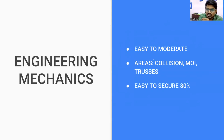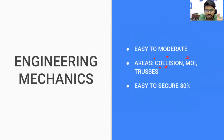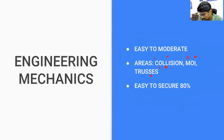Engineering Mechanics had three questions — which is a good number for this subject. One question is from collision, which is a repetitive topic appearing every year. Moment of inertia question is very simple if you know standard formulas for rectangle and triangle. Trusses is an easy one too. Overall, easy to score 8 out of 10 — that's 80% guaranteed from Engineering Mechanics.